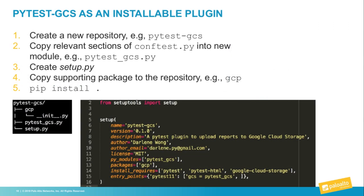Making this an installable plugin is very similar to the previous plugin. The difference is I created a wrapper for the Google Storage functionality as a separate GCP package. In setup.py, you need to include that in the packages list, and since this package depends on the Google Cloud Storage package, you need to include that as a dependency as well.